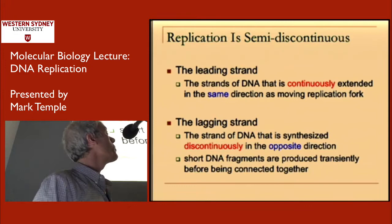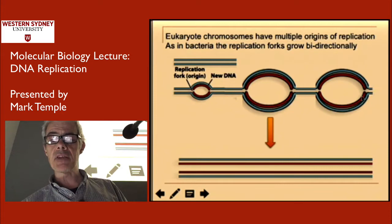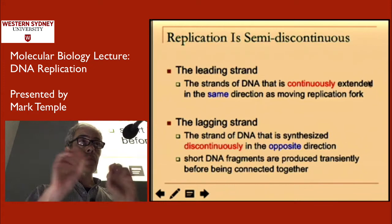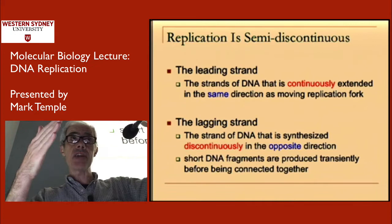We've got two strands of DNA running in opposite directions, and we know from those previous experiments that at any point of DNA replication both strands are being replicated. One strand runs in the five prime to three prime direction, the other runs three prime to five — they're opposites. But DNA is always synthesized in the five to three direction, so that causes a complication for the cell.